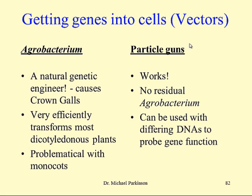This is a problem because most of the most important crop plants are actually monocots. In the 1970s and early 1980s, when researchers were looking at agrobacterium as a means for getting genes into cells, they looked at infectivity across a wide range of monocots and dicots. They found that when they transformed monocots with agrobacterium they did not get gall formation, whereas with dicotyledonous plants they did, and they concluded that agrobacterium did not infect monocots.